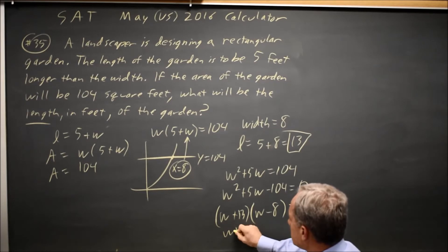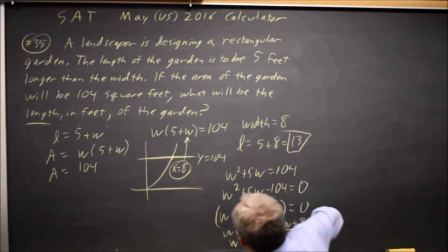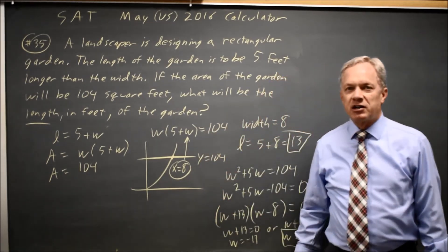If this product is 0, then W plus 13 equals 0, so W equals negative 13, or W minus 8 equals 0, so W equals positive 8, and that is the width that we found, and from there you add 5 to get the length.